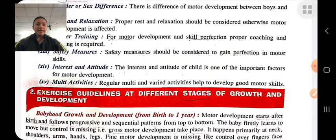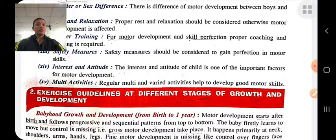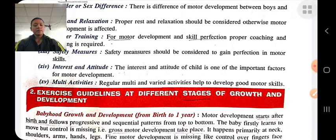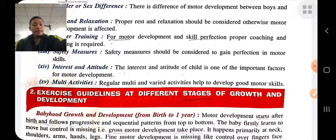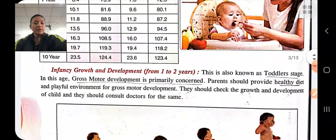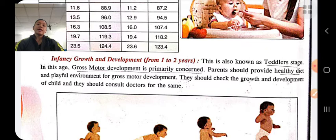In summary, exercise guidelines at different stages: in babyhood, gross motor development takes place, so the child should do activities like crawling, rolling, walking, standing, and sitting — there is no fine motor development and the child is unable to control himself. In infancy, gross motor development also takes place; the child should be provided healthy diet and a safe, healthy environment, and perform activities like standing, sitting, rolling, crawling, and walking.